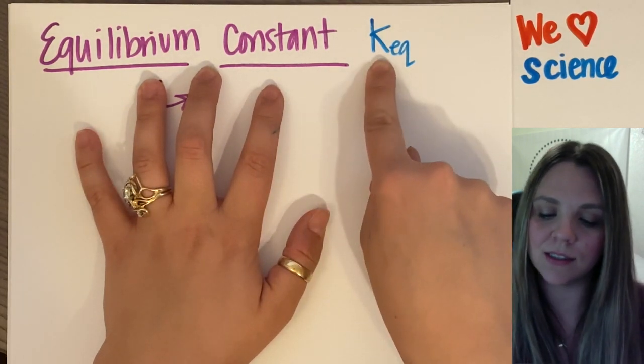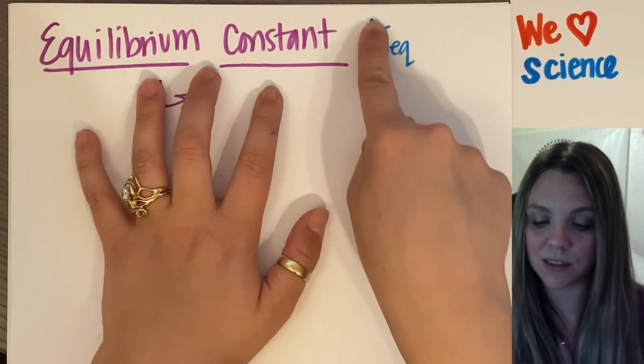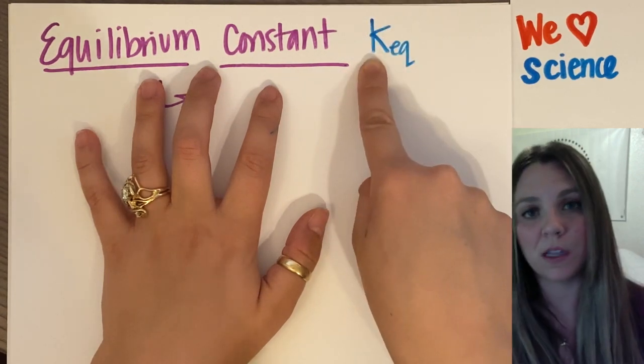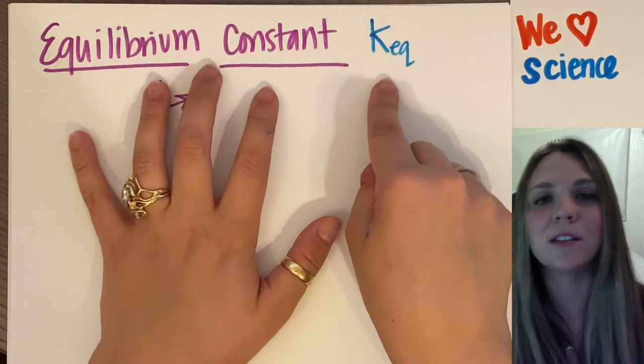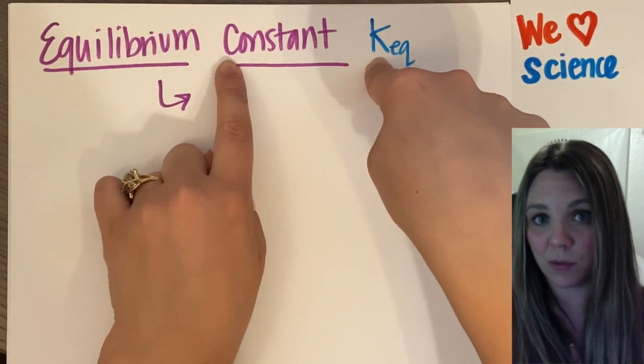And I have something called the equilibrium constant. Why is the constant K? This is the symbol for the equilibrium constant, K of equilibrium. Why not C? Just to confuse you. So the constant is K of equilibrium.